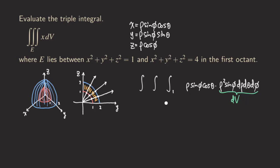For the upper limit, no matter which angle φ we choose, the outer boundary is the sphere of radius 2, so all those points are 2 units from the origin. Therefore the upper limit is 2. All points between the two spheres have ρ between 1 and 2, so ρ goes from 1 to 2.